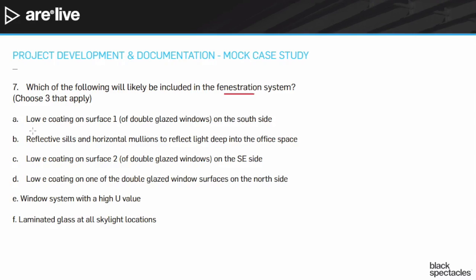Answer A: low-E coating on surface one of double-glazed windows on the south side. South side sounds good, but surface one sounds problematic — I'll come back to that. Answer B: reflective sills and horizontal mullions to reflect light deep into the office space. Given that the program and climate information emphasize gaining natural daylight, that sounds like a great answer. I'll tentatively mark B as one of the correct choices.